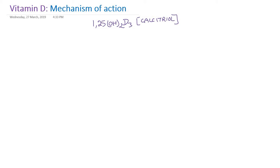Whatever the functions of vitamin D are, they are through this active form. Calcitriol acts mainly on the intestine, kidney, and bone. Besides these three major organs, vitamin D can act through many tissues, because whatever the action of vitamin D is, it is through a receptor called the vitamin D receptor. Researchers have found that many tissues and cells have this receptor.